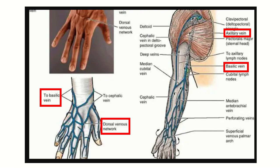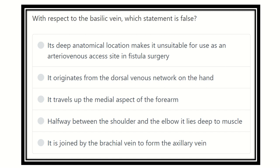Welcome to another question and answer video. This question is about the basilic vein — which statement is false? We need to identify which statement is not true regarding the basilic vein. The options are: its deep anatomical location makes it unsuitable for use as an arteriovenous fistula site; it originates from the dorsal venous network of the hand; it travels up the medial aspect of the forearm; halfway between the shoulder and elbow it lies deep to the muscle; and it is joined by the brachial vein to form the axillary vein.